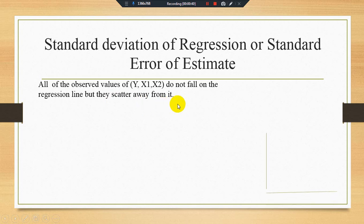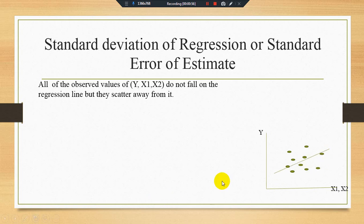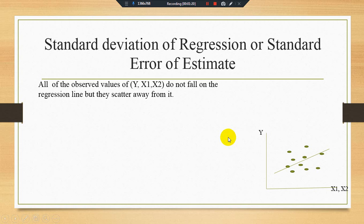Let us see graphically. Here we have two independent variables x1 and x2 and one dependent variable y. These are some observed values of y, x1 and x2, and with the help of these observed values we find the estimated regression line. See here — the dots are observed values and this is our estimated regression line.